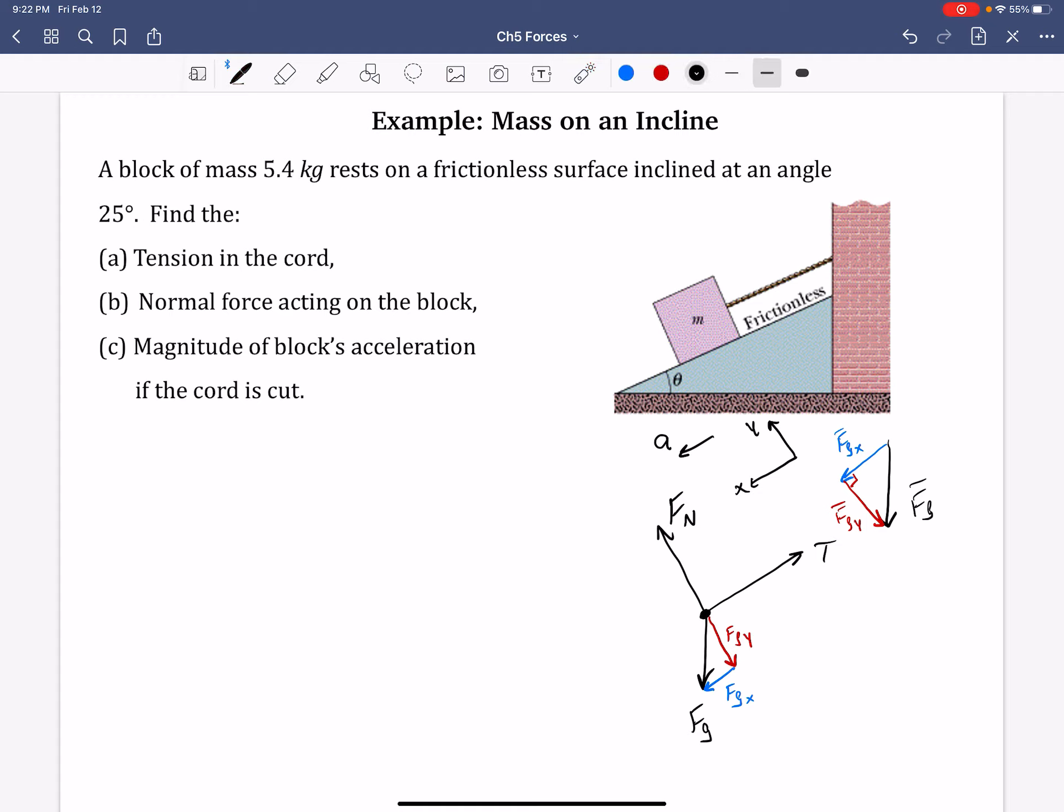And now we're ready to write out our second law equations. The net force in the X, following this convention, positive X being down and to the left, we have only one, FGX. And in the negative X direction, it is tension. And that's it for the X direction. Right now it's not moving, so we still write MA, MA X, but that's really equal to zero because it's not accelerating yet.